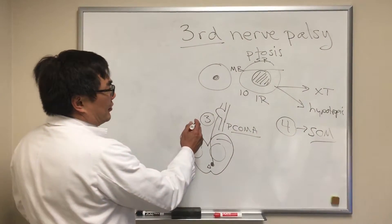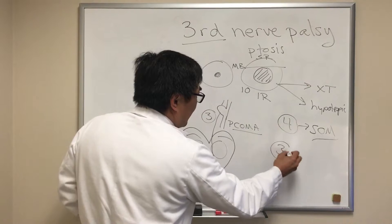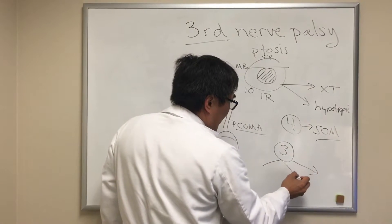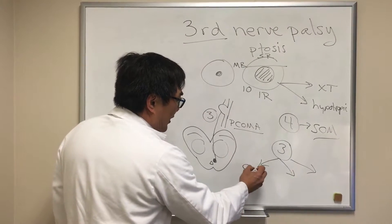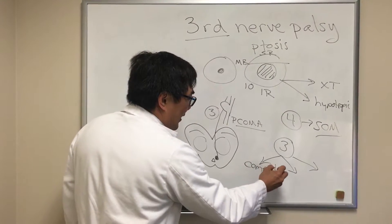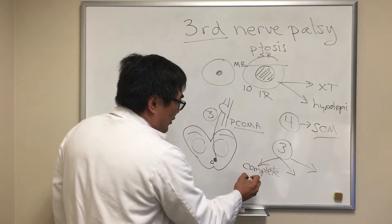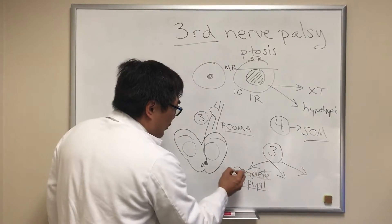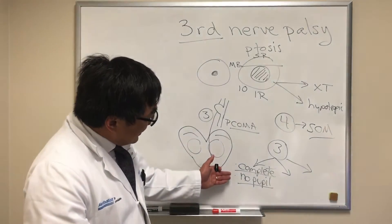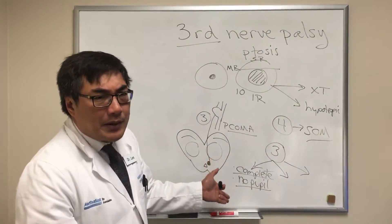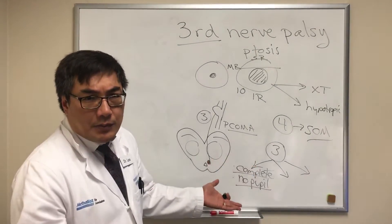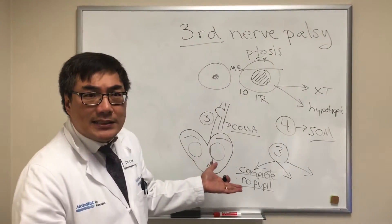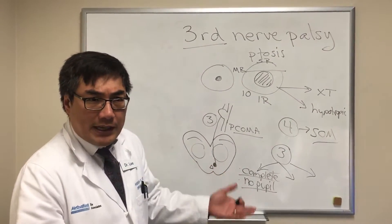Once you've confirmed it's an isolated third nerve palsy, we need to figure out what to do. Some would say that a complete palsy in a vasculopathic patient with complete pupil sparing can be observed. That's probably okay, but most people would image a third nerve palsy regardless of pupil involvement, regardless of pain, and regardless of the completeness of the palsy or ptosis.